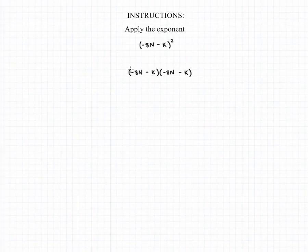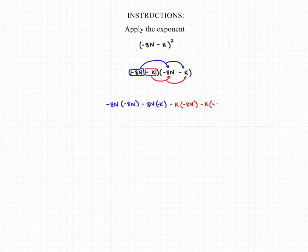We then need to take the first term in our first polynomial and multiply it through by each of the terms in our second polynomial. So we'll have negative 8n times negative 8n and negative 8n times negative k. We then go back to our first polynomial, take the second term, and we repeat the process, multiplying it through. So we'll have negative k times negative 8n and negative k times negative k.